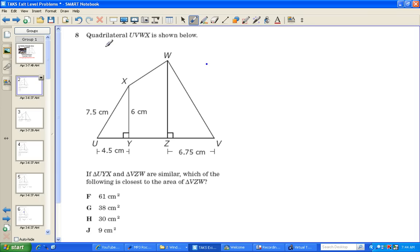We're going to look at this problem. Quadrilateral UVWX is shown below. If triangle UYX and triangle VZW are similar, which of the following is closest to the area of triangle VZW?